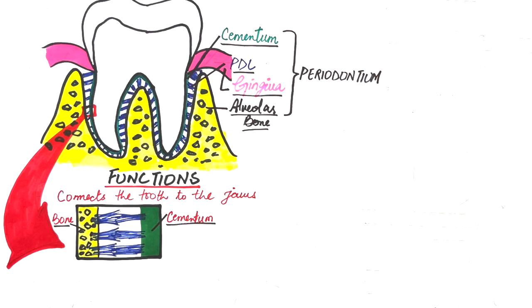At one extremity, the fibers of the PDL are embedded in bone, and at the other extremity, the collagen fiber bundles are embedded in cementum. The embedded portion or the terminal portion of the PDL fibers, either at the site of the cementum or at the site of the bone, is referred to as Sharpey's fibers.